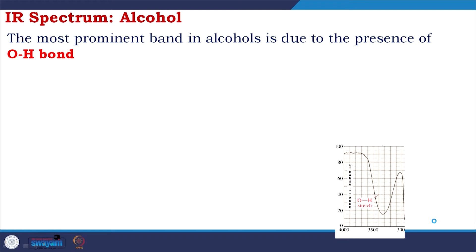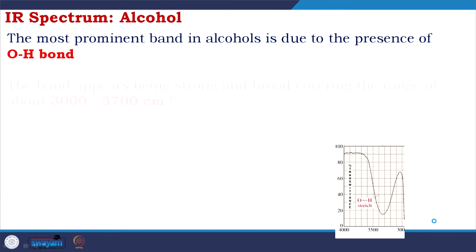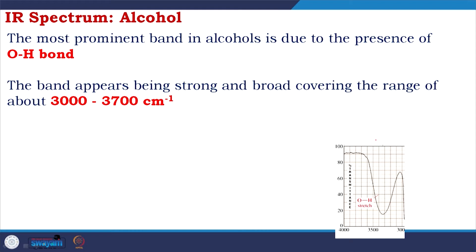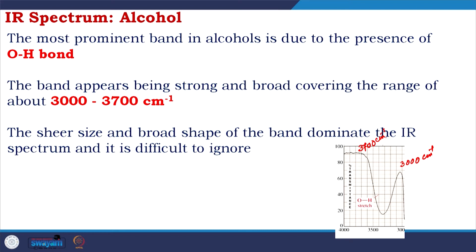The most prominent band in alcohol is due to the hydroxyl (OH) group. The band is strong and broad, covering a range from about 3000 to 3700 cm⁻¹. Its sheer size and broad shape dominate the IR spectrum and are difficult to ignore — if you have a hydroxyl group, you will certainly get this band.